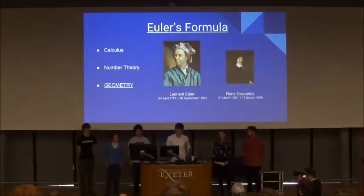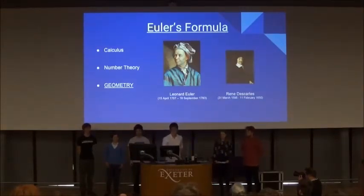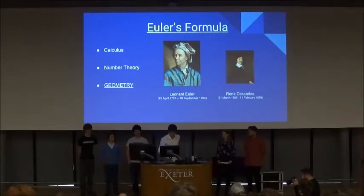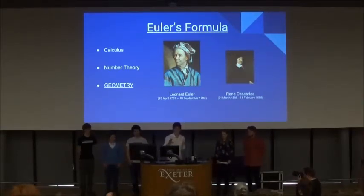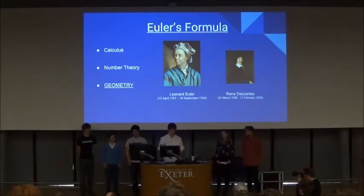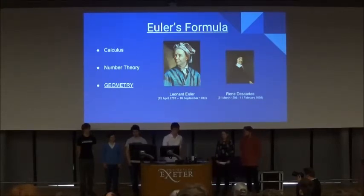Euler's polyhedral formula states that for a polyhedron, or 3D shape, V plus F equals E plus 2. It basically means that the number of vertices plus the number of faces is equal to the number of edges plus 2. And it's true for most convex polyhedra, which is where all the vertices are pointing outwards, some non-convex, and all the platonic solids.